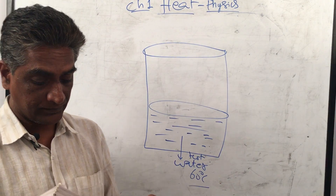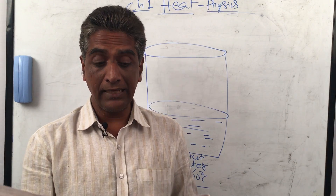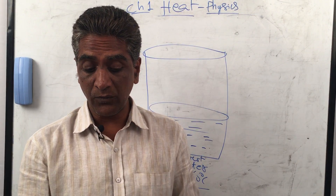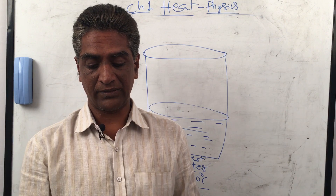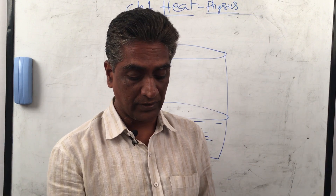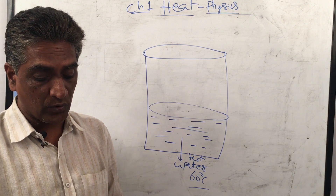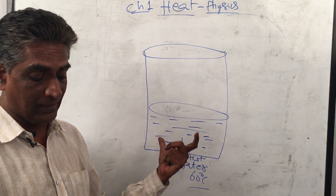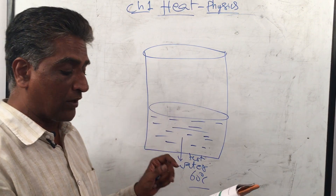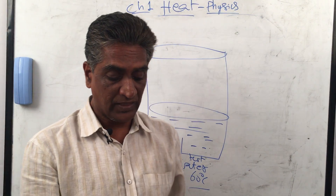Take a cylindrical transparent glass jar and fill half of it with this hot water. So you take a cylindrical transparent glass jar, fill half of it with hot water, and you have hot water in that transparent cylinder.